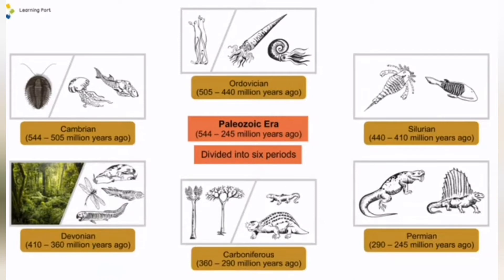Next, the Paleozoic era lasted from 544 to 245 million years ago. It is divided into six periods: the Cambrian, which lasted 544 to 505 million years ago; Ordovician, 505 to 444 million years ago; Silurian, 440 to 410 million years ago; Permian, 290 to 245 million years ago; Carboniferous, 360 to 290 million years ago.